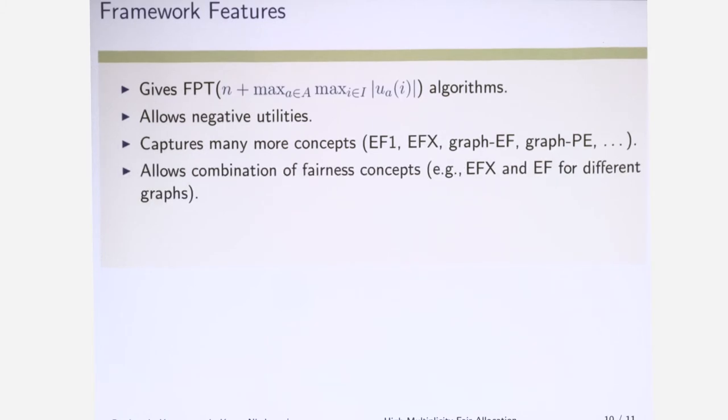You can also combine two graphs. One graph is describing where there must be envy-freeness up to any good, and where there must be strict envy-freeness. So you can take two different graphs, combine those concepts, and write a particular ILP, and then plug it into the framework.